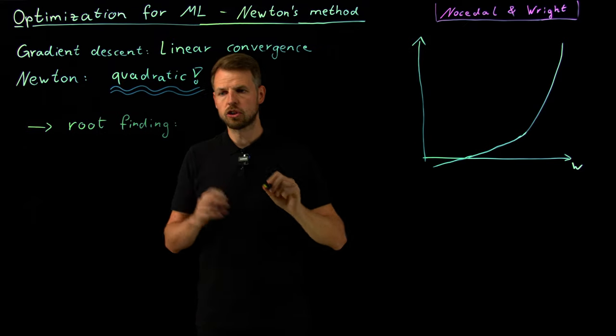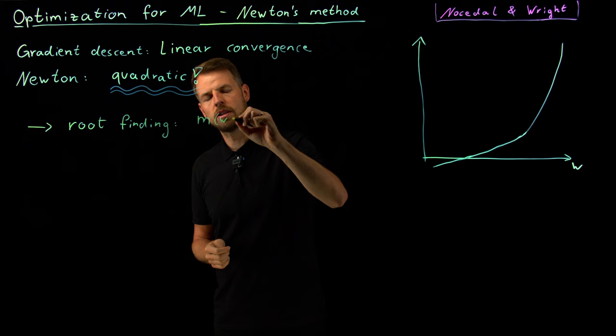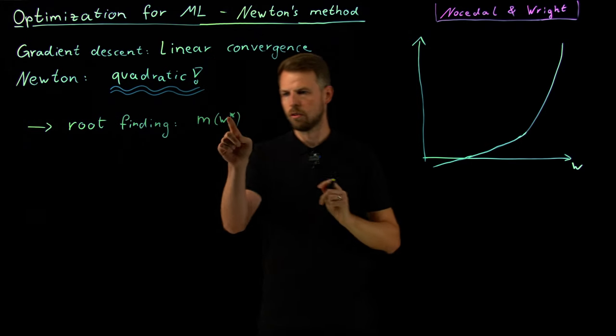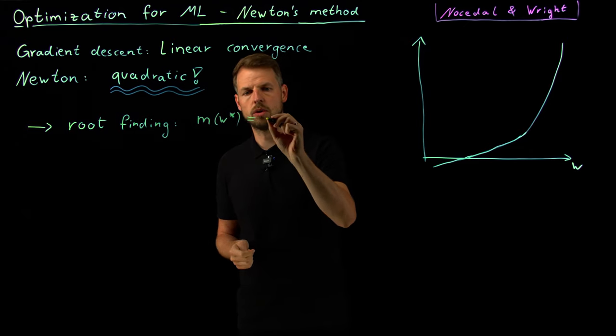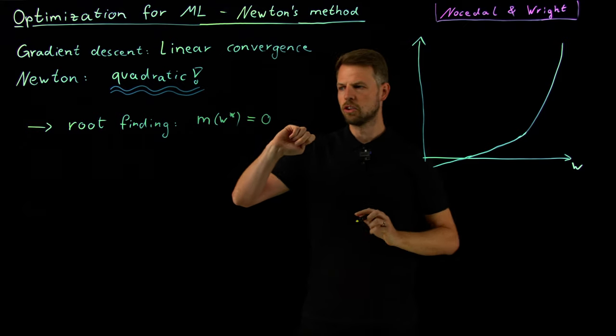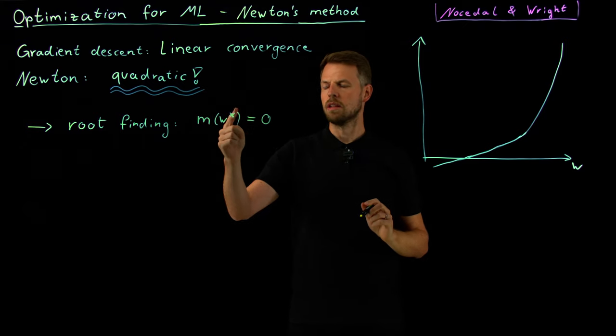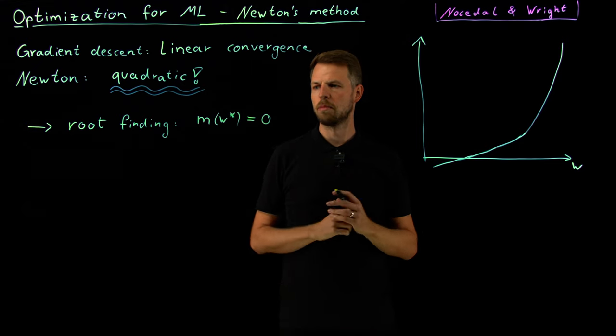So we have a function, let's call it M, that depends on a parameter W, and the root means that for the W star, for a particular value, this function has the value zero. So it's not immediately optimization, it just means give me the value for W for which the function M has the value zero.